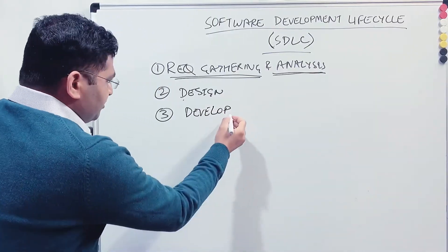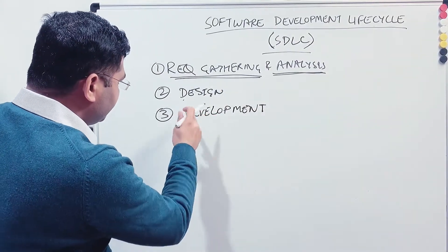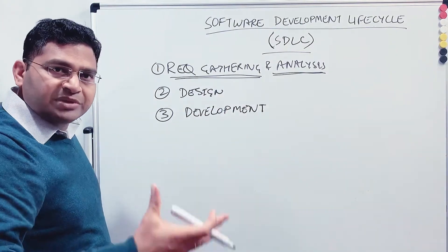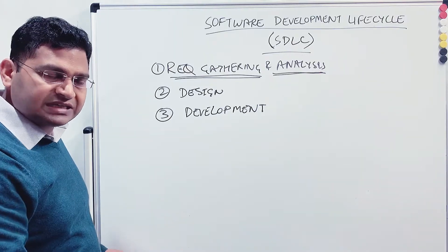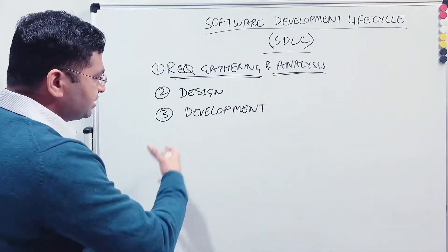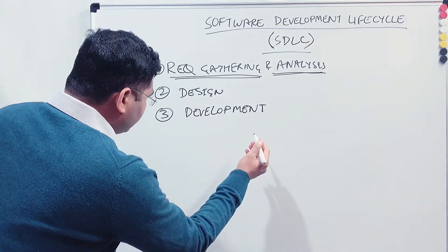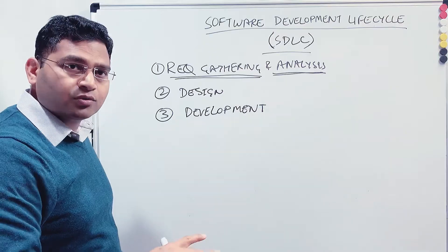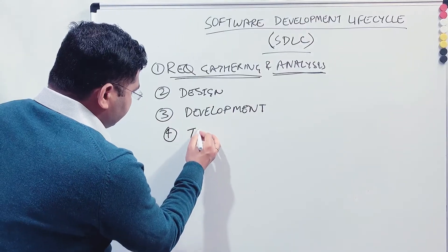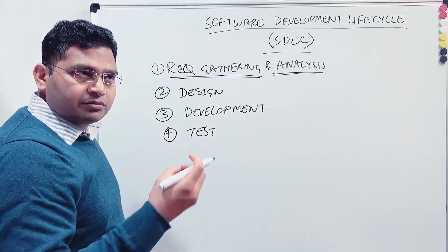The third phase is Development — the actual coding phase. Once the design is ready and you know what needs to be built, the development team starts writing code to implement the requirements. It's like having a house design finalized and then starting to lay bricks — the foundation is set and building begins.